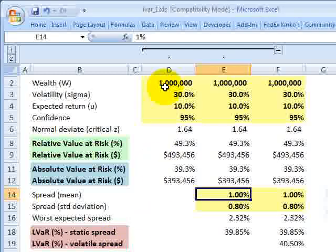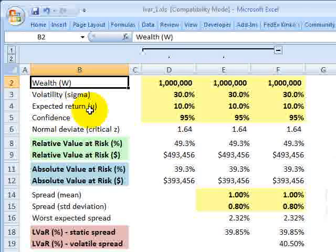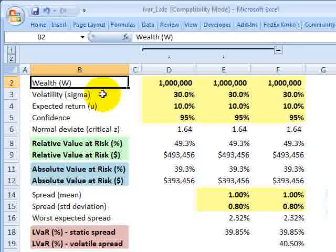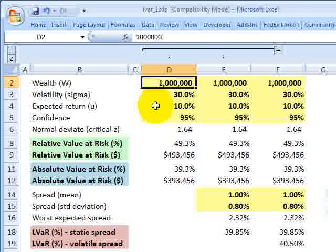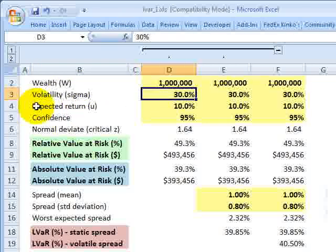As usual, I need some assumptions. I only need four to start, and these are the following: the wealth of the stock or the portfolio, denoted by W, so I'm following Jorian's notation there. I'll assume the portfolio has an initial value of $1 million. And then volatility, denoted by sigma, with a standard deviation of 30%.